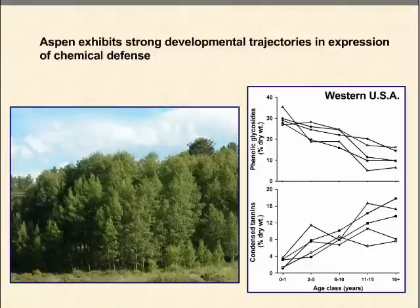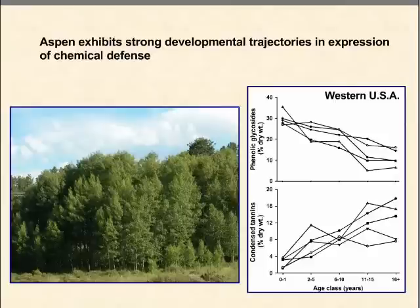Aspen also exhibits very strong developmental or ontogenetic trajectories in the expression of defense compounds. Both in the Great Lakes area and in the Intermountain West, we've run transects through clones starting at the periphery with very young ramets and extending toward the middle with much older ramets, then quantified aspects of tissue chemistry along those transects. Levels of phenolic glycosides decline quite precipitously especially in the early age classes — there's quite a drop in the first several years of growth of an Aspen ramet.